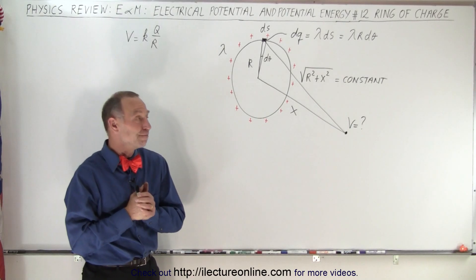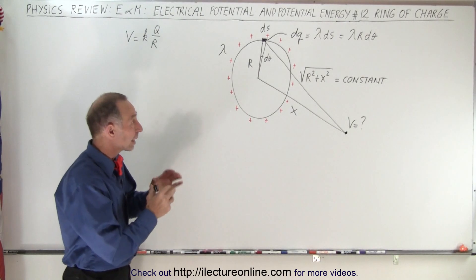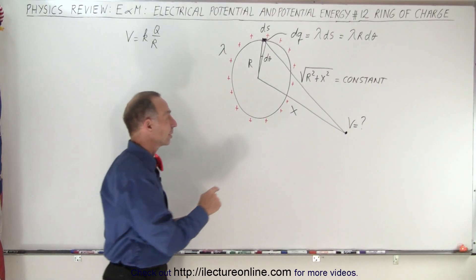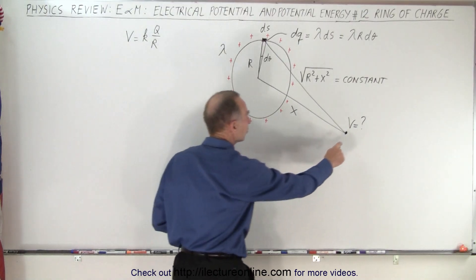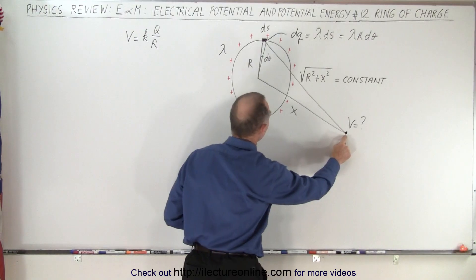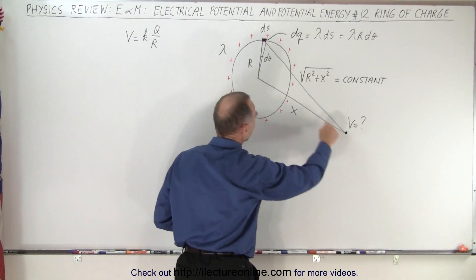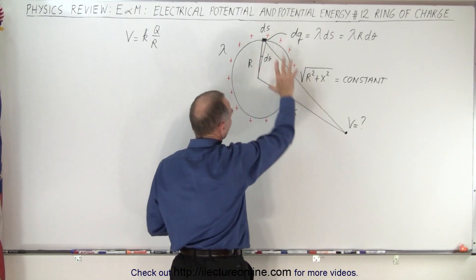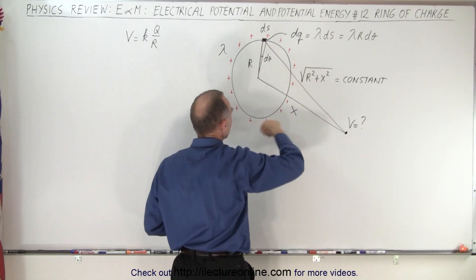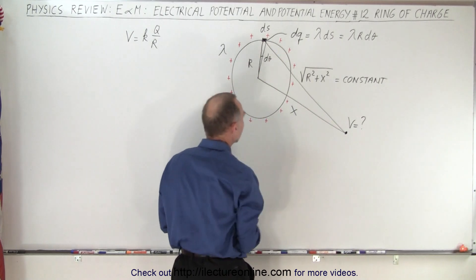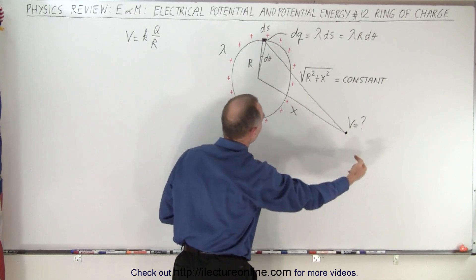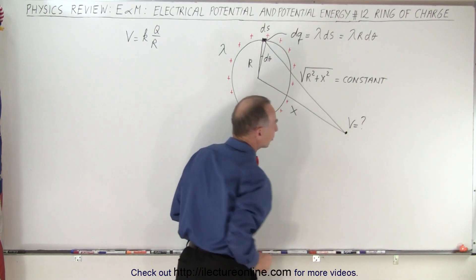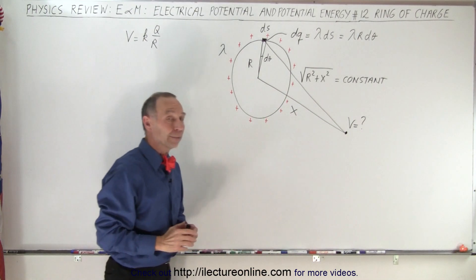Welcome to our lecture online. We're going to take a look at a ring of charge and we're trying to find the potential — the voltage — on a line at a distance away from the center of the charged ring. This is the line perpendicular to that ring, and we want to find the potential at that point right there.